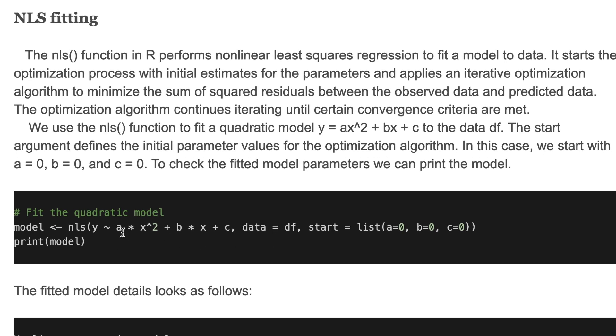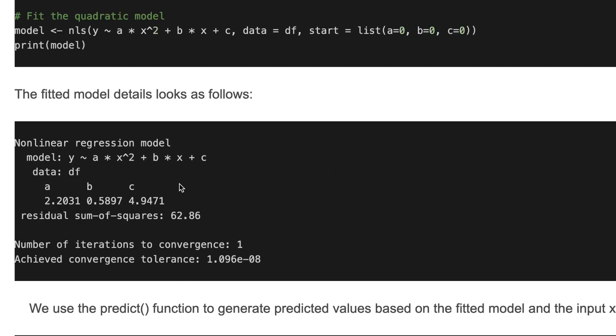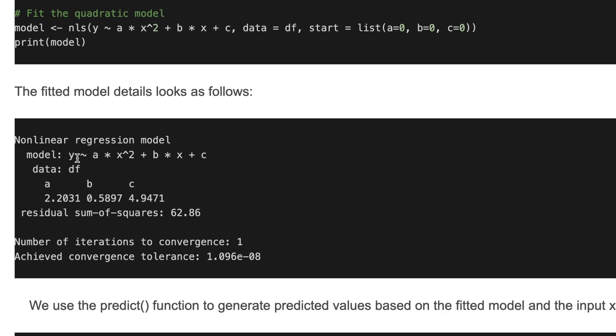Here is how to use the nls() function. We provide a quadratic model here: y = a*x^2 + b*x + c. This is the quadratic model function with the DF data and the starting points for a, b, and c parameters. Here we can start from 0 for all of the parameters. The fitted model details look as shown here. Here is the model function and the parameters of a, b, and c, the residual sum of squares.